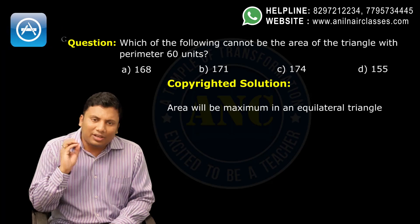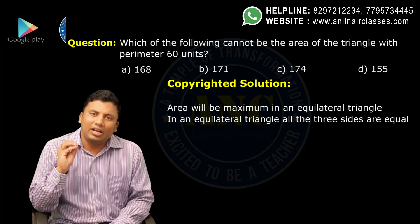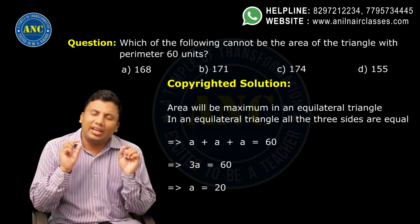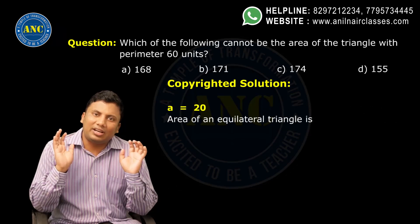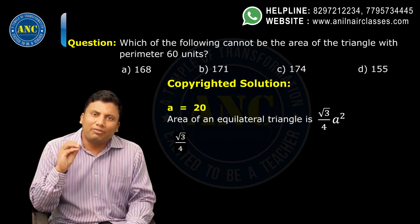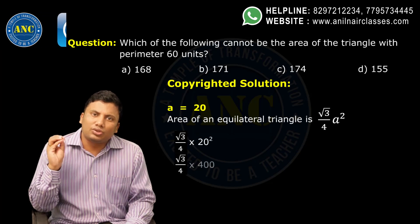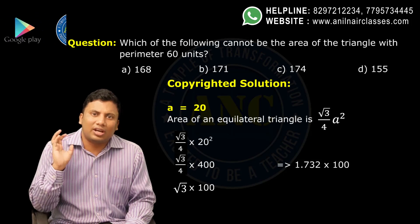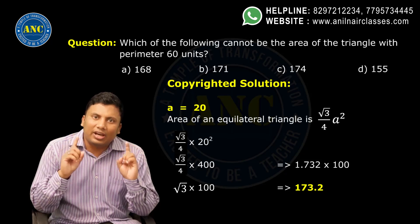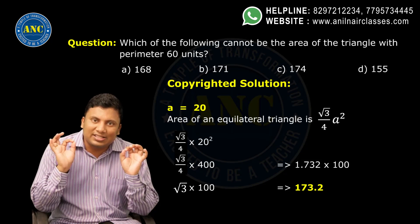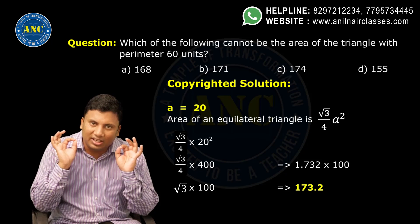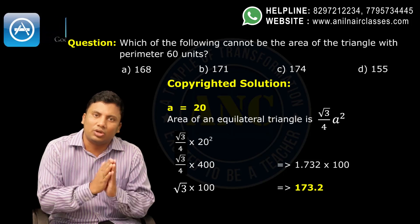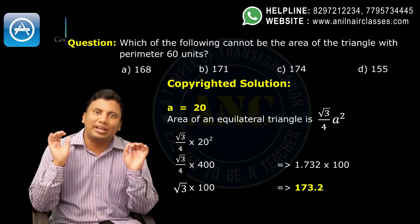If I take the triangle to be an equilateral triangle, perimeter is 60. In an equilateral triangle, all three sides are equal: A + A + A = 60, so 3A = 60, meaning A = 20. Area of an equilateral triangle is (√3 / 4) × A². That gives (√3 / 4) × 400 = √3 × 100. Since √3 = 1.732, the result is 173.2. In an equilateral triangle, area will be maximum — meaning the maximum area possible with perimeter 60 is 173.2.